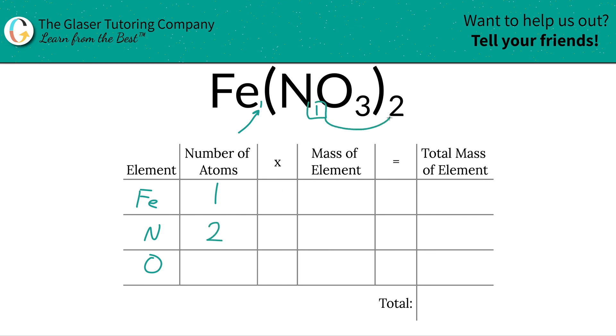just simply take the subscript of nitrate, multiply it by the outer subscript to find the total. Then we're going to do the same process for oxygen. It's three, but there's an outer subscript of two, so just simply multiply those two together and that works out to be a total of six. Then we're simply going to multiply those number of atoms by the mass of the element. Where do we find the mass? The periodic table.